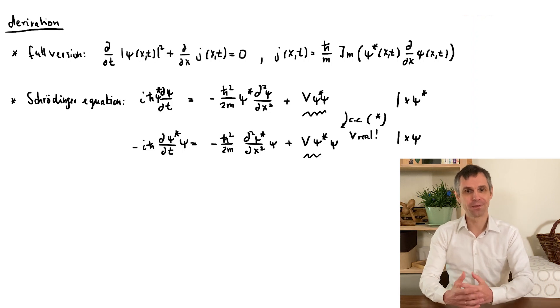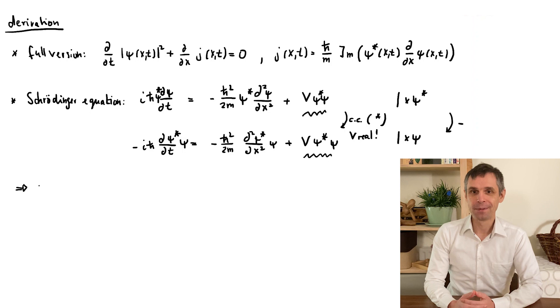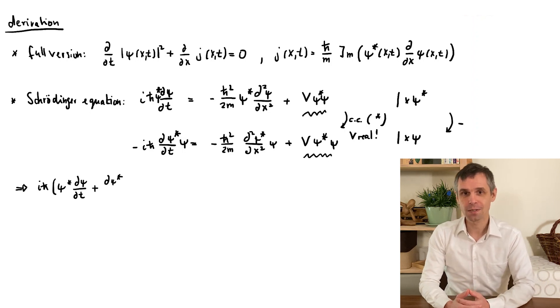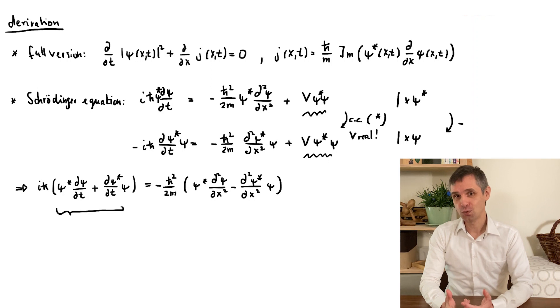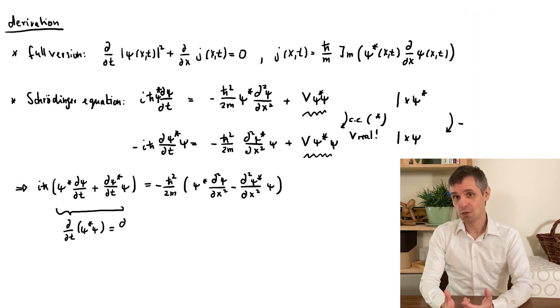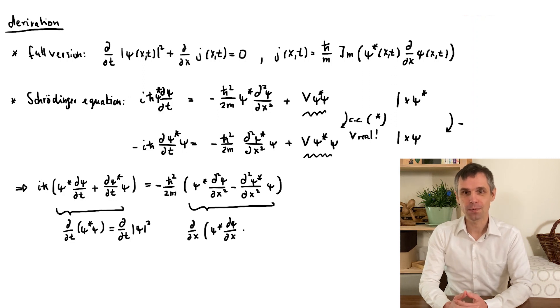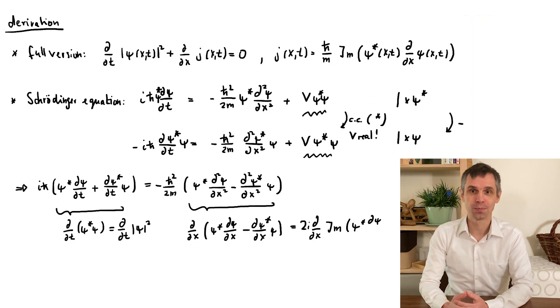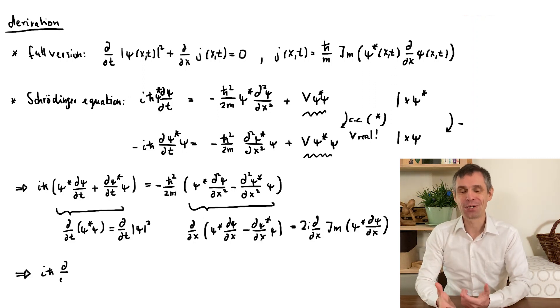So taking this difference, the term which is underlined just drops out, and we get an expression that applies to all systems for any potential, even time-dependent ones. Now, in this expression, we can conveniently use the general rules of calculus to combine the derivatives. To verify this step, you can start from the result and work backwards using the product rule. So we arrive at a quite compact expression.